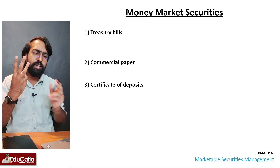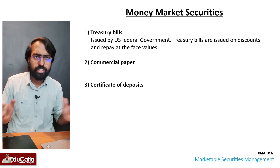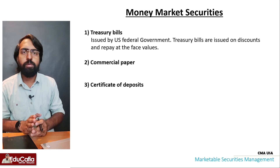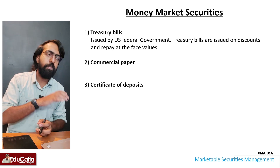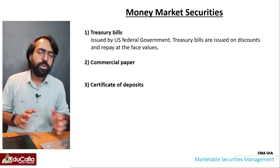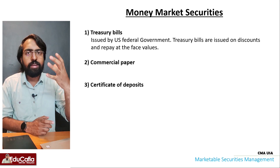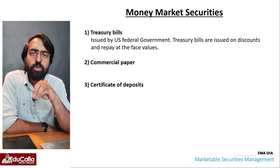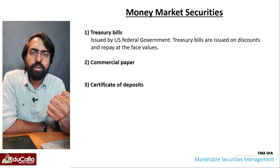The money market securities include three types: Treasury Bills, Commercial Bills, and Certificates of Deposit. Treasury Bills are issued by the US federal government — they are risk-free. Treasury bills are issued at a discount and repaid at face value. For example, you may purchase a treasury bill for $950 and receive $1,000 at maturity.